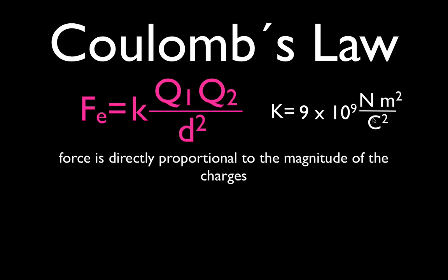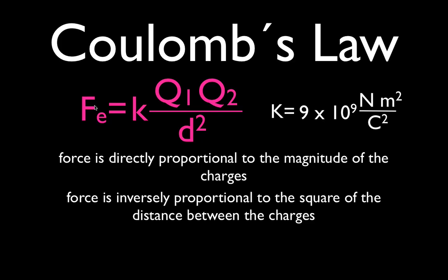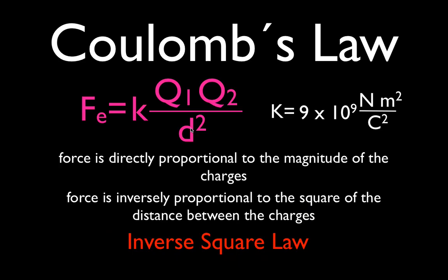This equation tells us that the force on a particle is directly proportional to the magnitude of the charges. If we increase either charge, the force goes up; if we decrease either charge, the force goes down. But the force is also inversely proportional to the square of the distance between the charges — this is distance squared, not just distance. As the distance goes up, the force goes down; as the distance decreases, the force goes up. This type of equation is often referred to as an inverse square law.